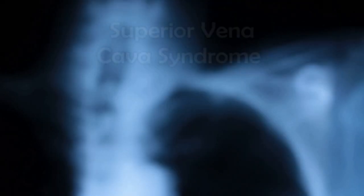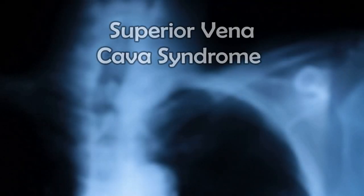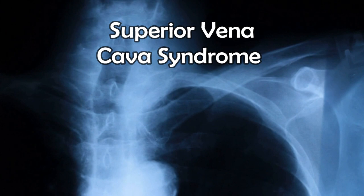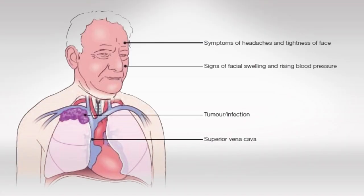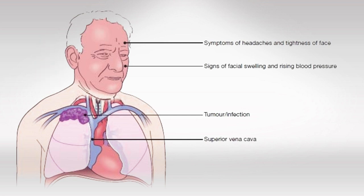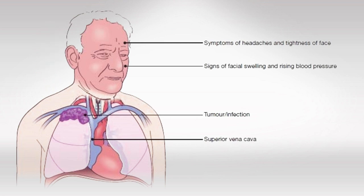Welcome back. In this video I'll teach you everything you need to know about Superior Vena Cava Syndrome. This syndrome is basically the result of compression of the superior vena cava vein. This vein normally drains the upper part of the body, so when it's compressed there's going to be stagnation and backing up of blood.